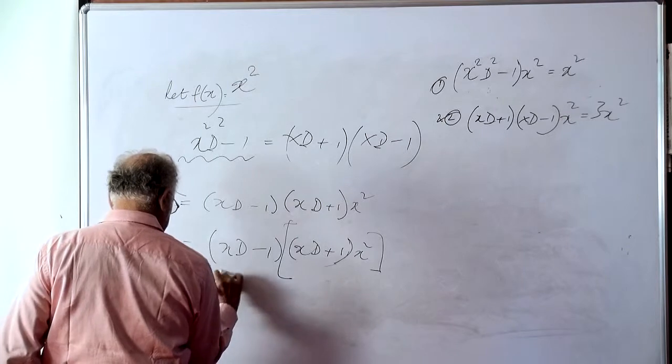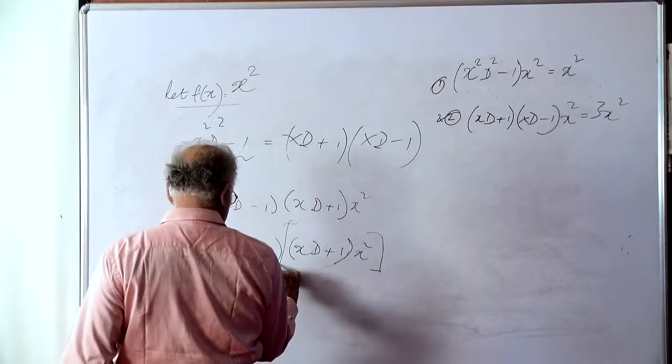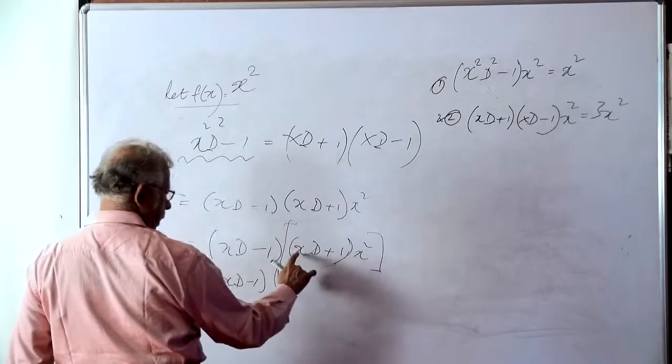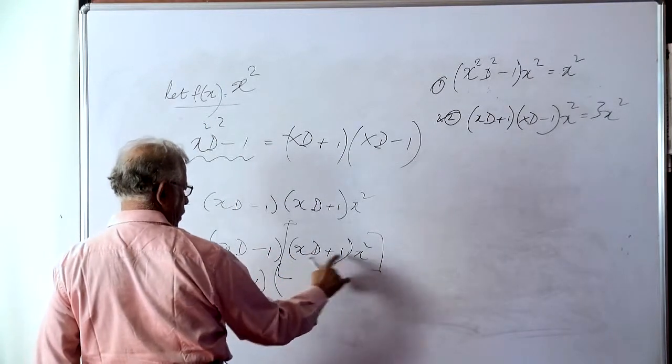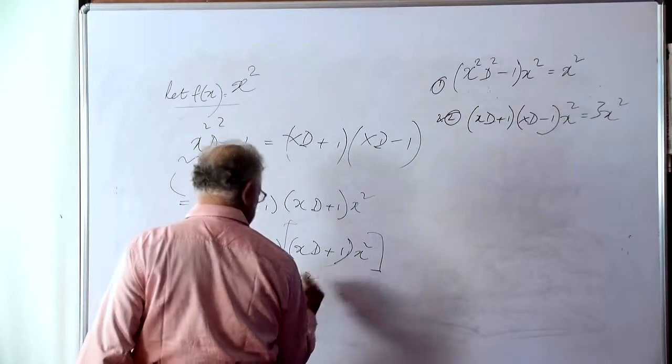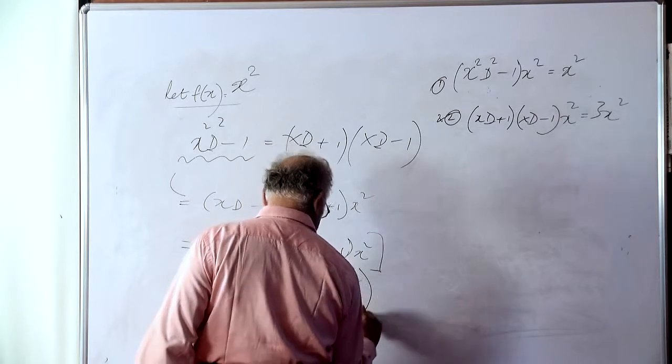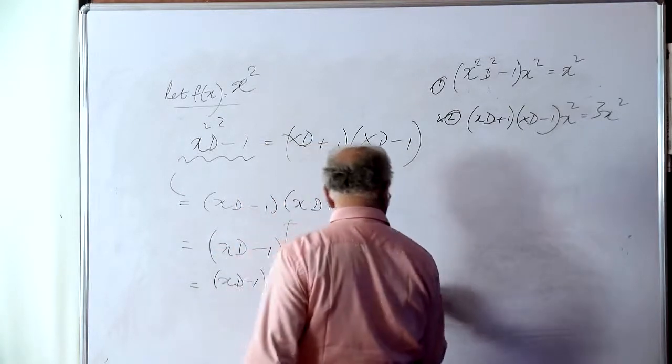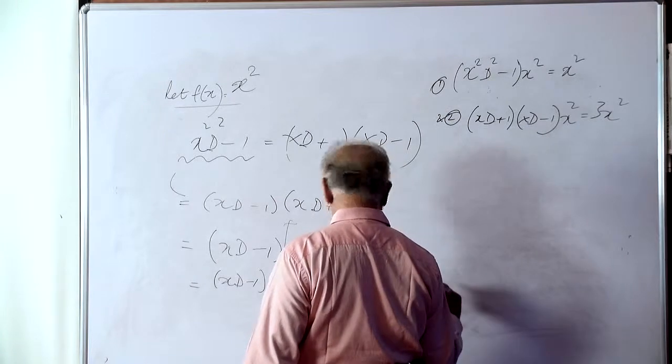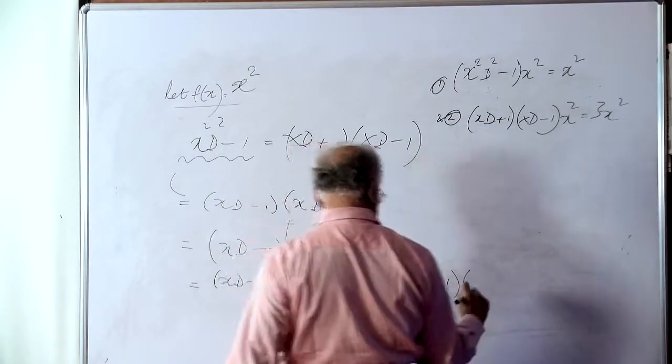So this is xd minus 1. What about this? xd of x squared is 2x, so that is 2x squared plus x squared. That means we have to now operate xd minus 1 on 3x squared.